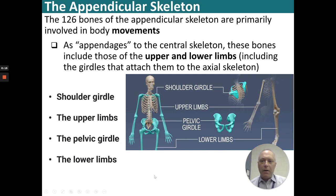The appendicular skeleton is made up of 126 bones and is primarily involved in movement. As the appendages to the central skeleton, these bones include the shoulder girdle, the upper limbs, the pelvic girdle, and the lower limbs.